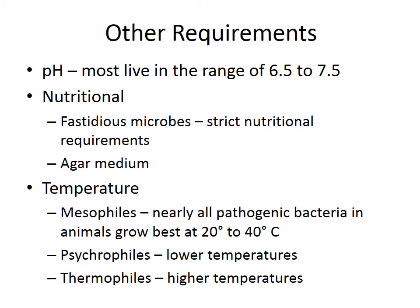Most bacteria live in the same pH range as our own body fluids — which makes sense for pathogenic bacteria, since they want to take advantage of that. Most are in the 6.5 to 7.5 range. They also have nutritional requirements like any organism. Fastidious microbes have really strict nutritional requirements, and that's why we're able to grow them nicely on things like agar medium.